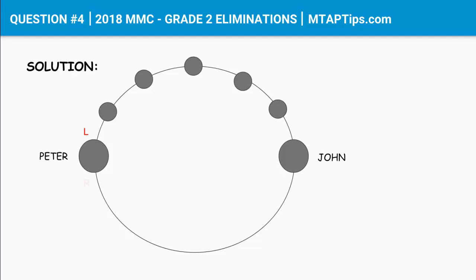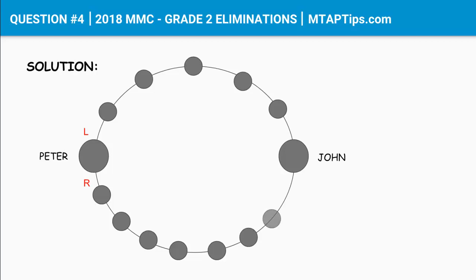Now, to the right of Peter, there are also eight children. So let's add 1, 2, 3, 4, 5, 6, 7, 8. There are eight children to the right of Peter, which is between Peter and John.